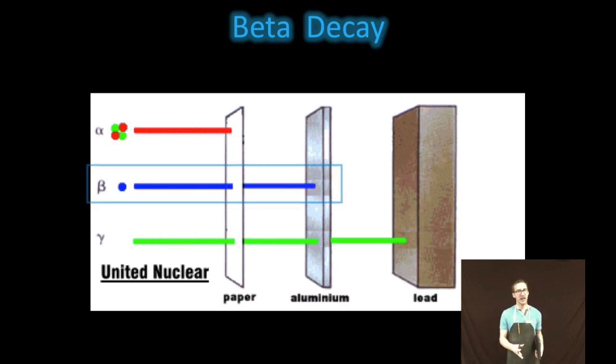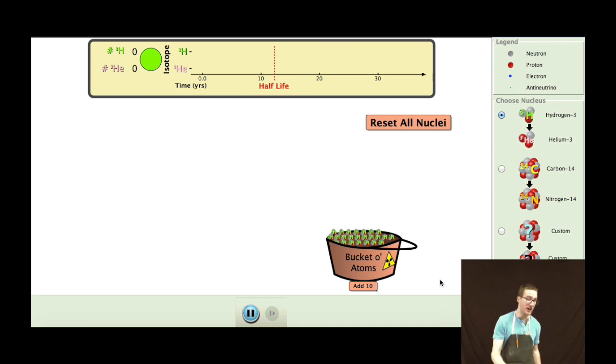I also have a thrilling animation to illustrate beta decay for you. This time I've got a bucket of hydrogen-3. I'm going to throw ten atoms onto my screen. Watch as they undergo beta decay.